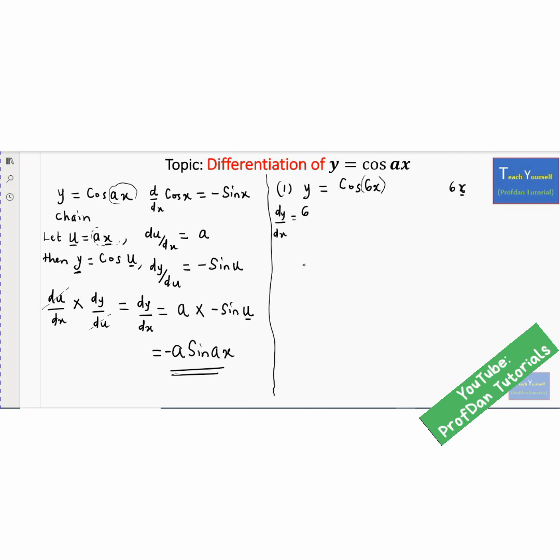And when you differentiate a cosine function, remember you get negative sin. So if I put that here, negative sin, we write this, you have 6x. That is it. So your a in this case, is in place of 6.